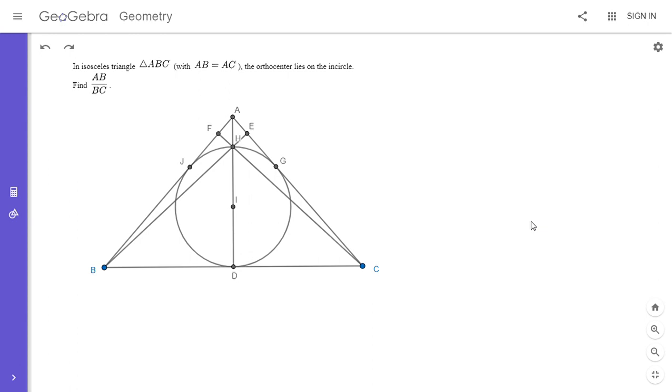All right, so I'm going to show you two different solutions, my solution and Ram's solution. We have an isosceles triangle ABC with AB equal to AC, and the orthocenter lies on the incircle, and we want to find AB over BC. So a fairly simple problem statement, but it still takes a few steps to solve it.